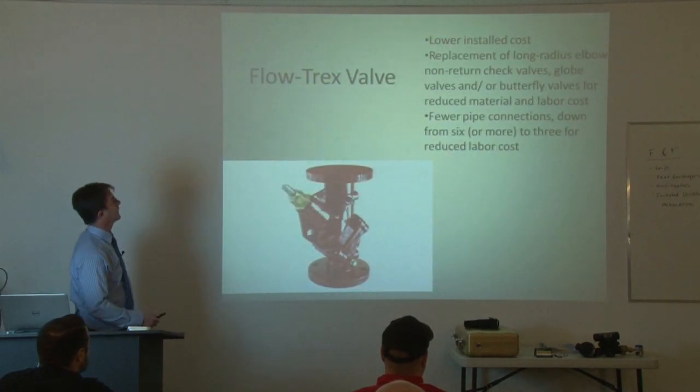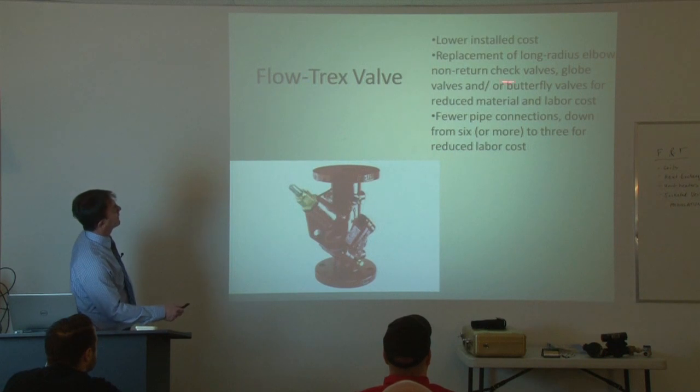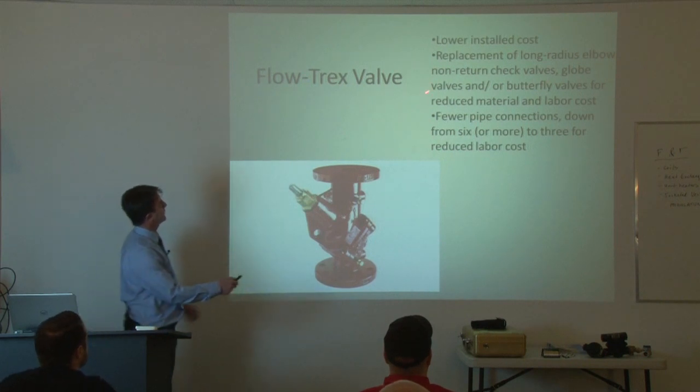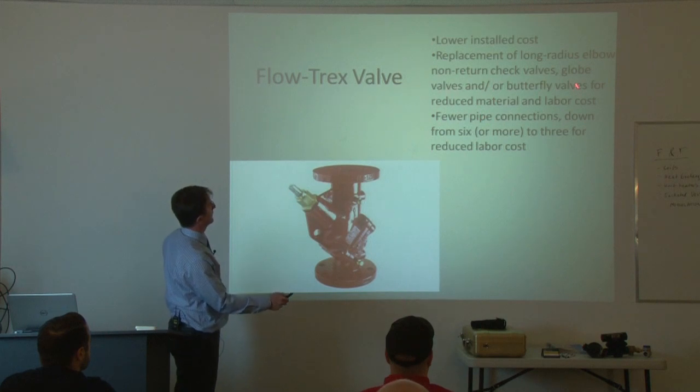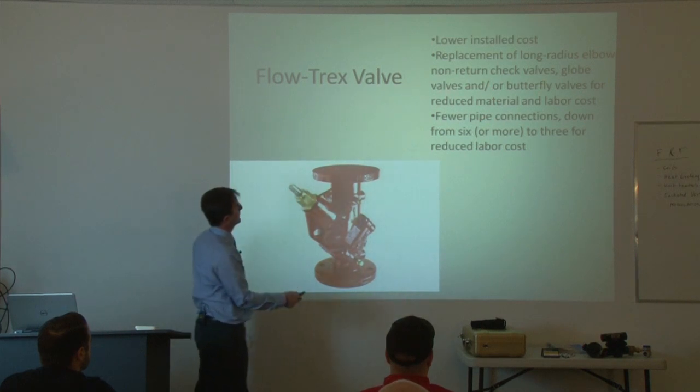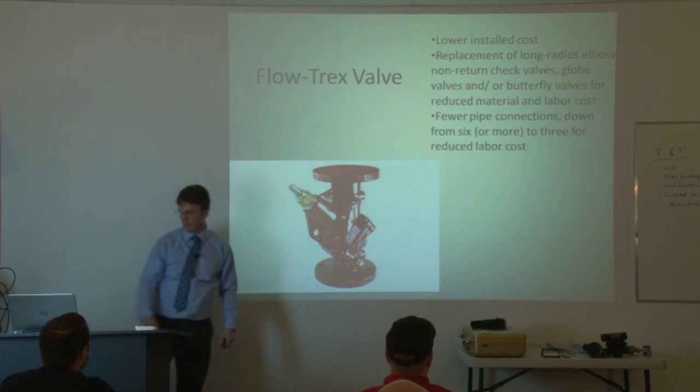And when you use a Flowtrex on the other side, then we reduce installation costs even more. Replacement of long radius elbows. Like I mentioned, this thing does three different functions all in one. So we don't have to have all separate valves. So fewer piping connections.